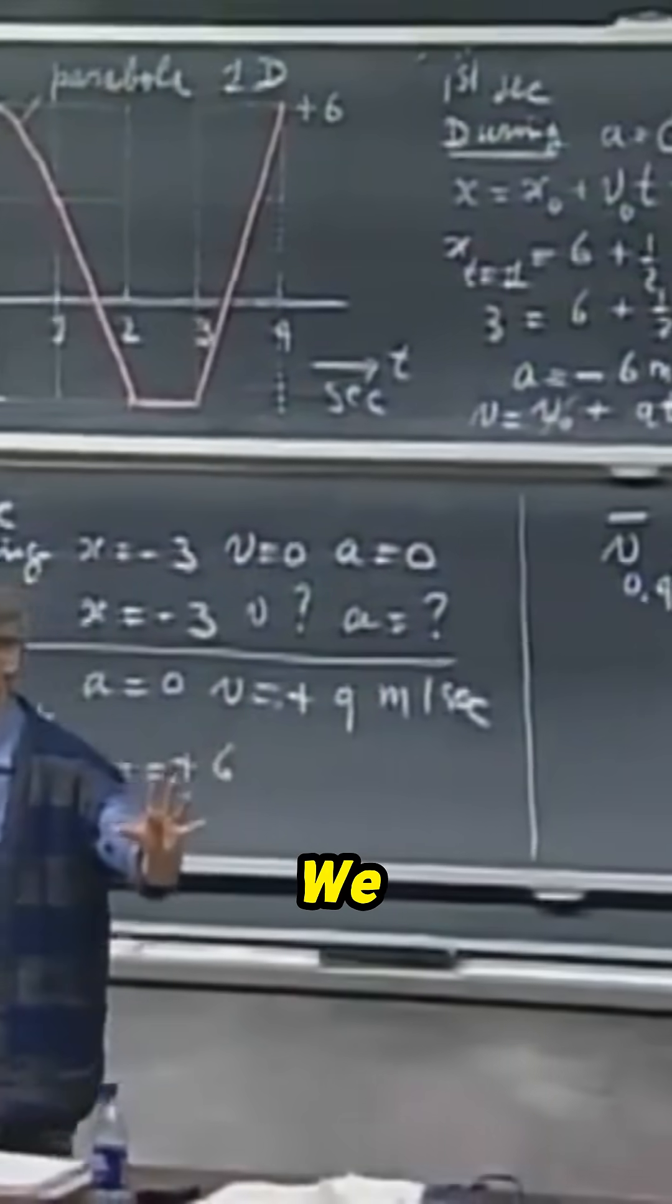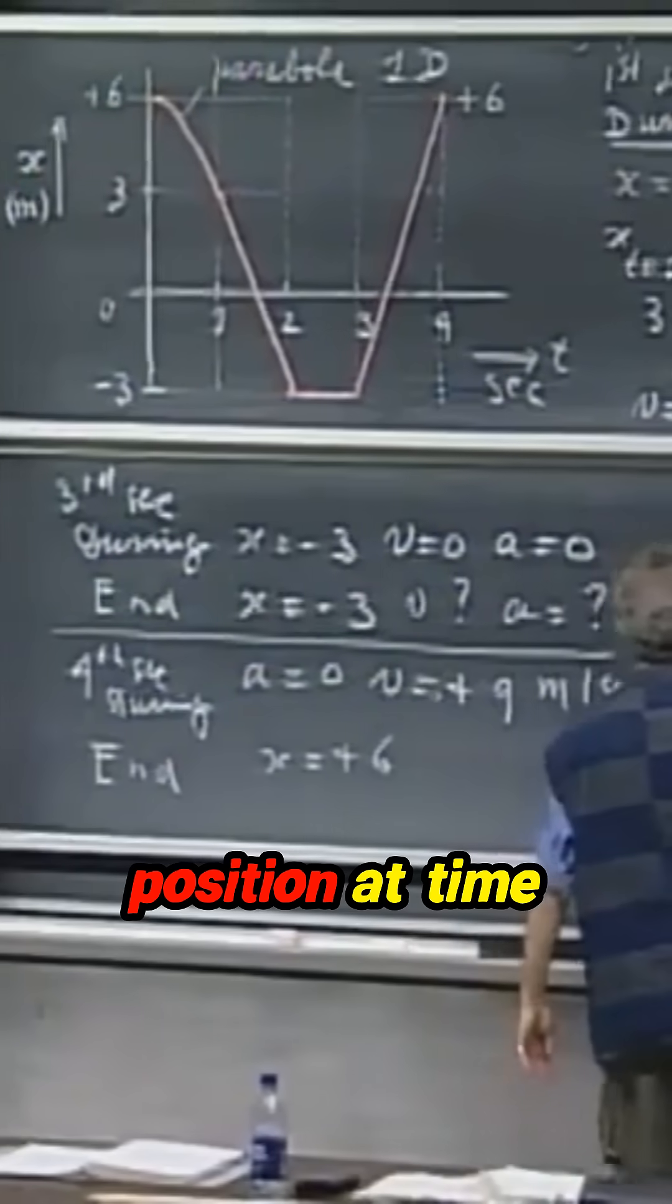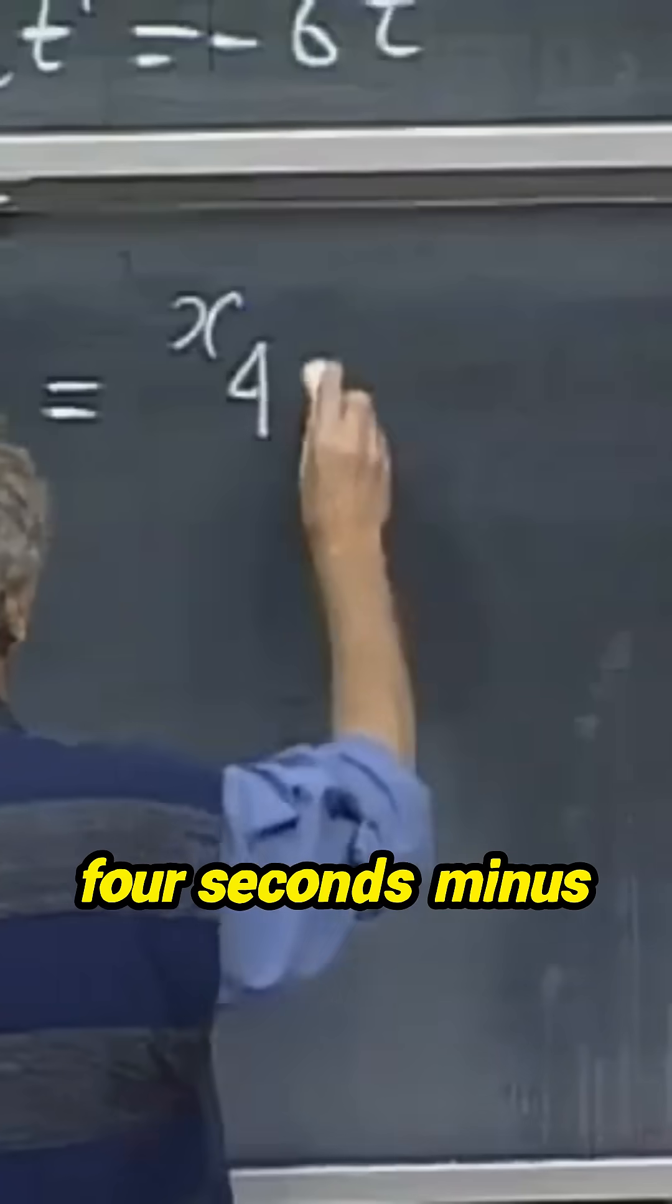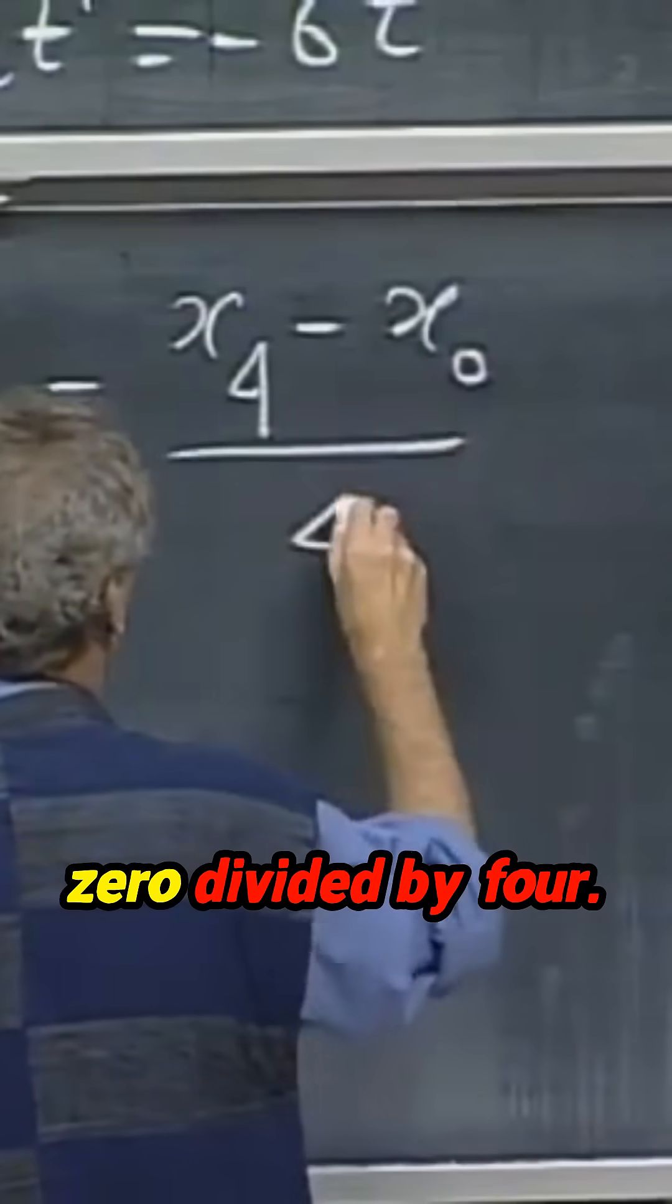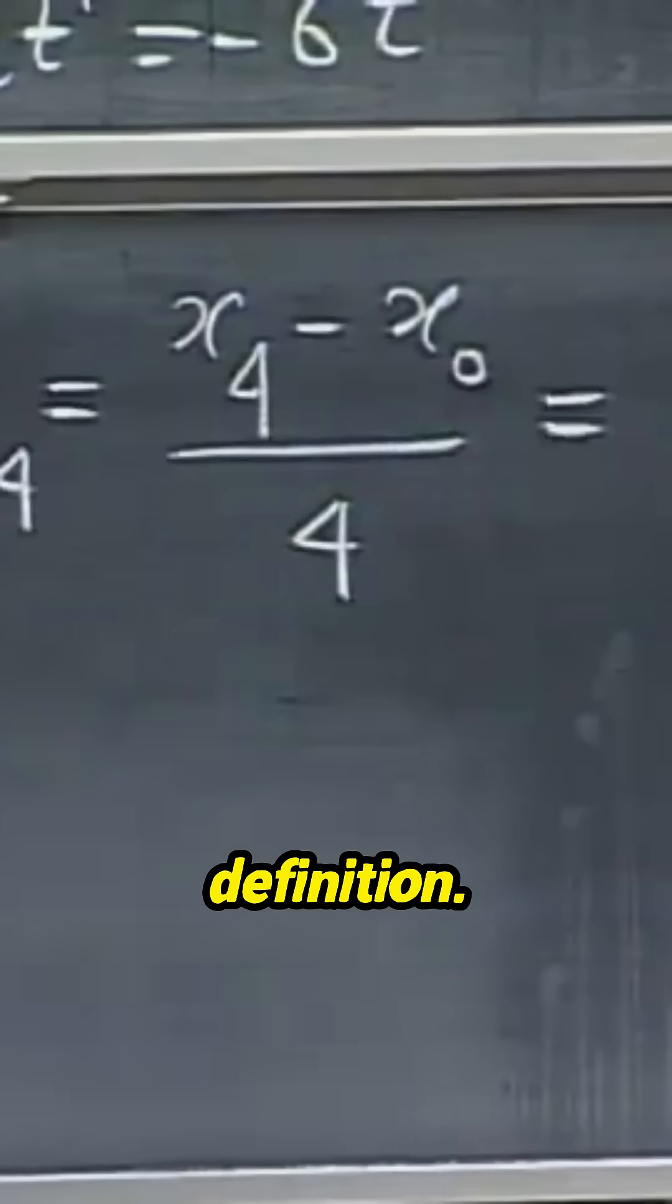Average velocity. We define average velocity as the position at time four seconds minus the position at time zero divided by four. That is our definition.